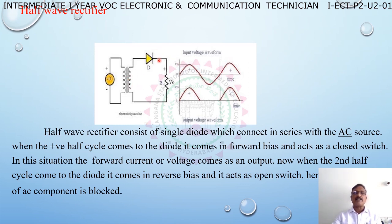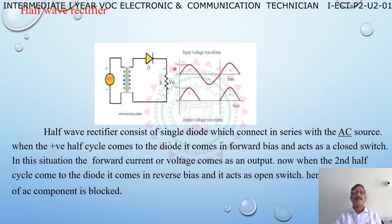When the diode is connected to the positive half cycle, the diode will be forward biased and it acts as a closed switch, so the same output is updated at the load. In the negative half cycle, the diode will be reverse biased, acts as an open switch, and blocks the negative half cycle. So only positive half cycles will be obtained at the load.